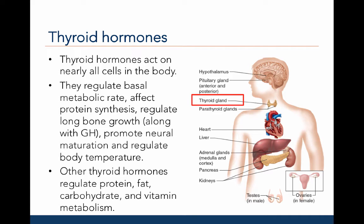Thyroid hormone acts on nearly all cells in the body. These hormones regulate basal metabolic rate, affect protein synthesis such as in the building of muscle, affect long bone growth in conjunction with growth hormone, promote neural maturation, and regulate body temperature. Other thyroid hormones participate in protein, fat, carbohydrate, and vitamin metabolism.